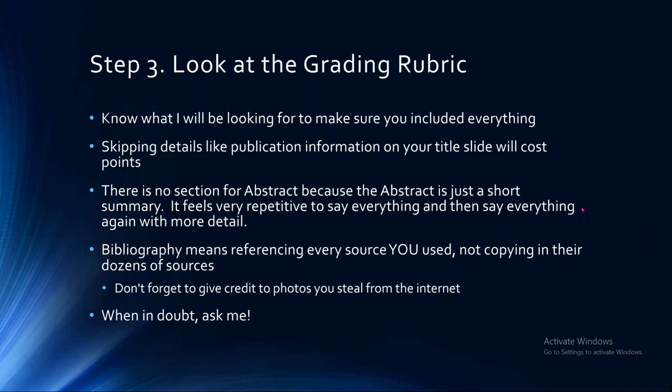Note that there is no section heading for the abstract because the abstract is just that short paragraph written at the beginning of the paper. If people try to present the abstract, they tend to read it word for word since it's already so summarized. While you do want to state your objective for the paper, you don't want to give all the information and then turn around and give it all again. Your bibliography means referencing every source you used — not copying out the paper's dozens of references and pasting them in. You need a proper reference for the paper you are citing. If your background information included something from the CDC, WHO, or your textbook, or any images that didn't come out of the paper, all of those need to be cited.